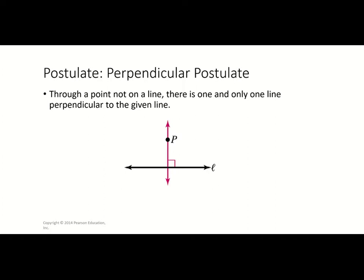Next we have the perpendicular postulate, which is also a repeat from before. It says: through a point not on a line, there is one and only one line perpendicular to the given line. So we have our line and the line going perpendicular through it.